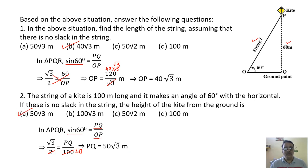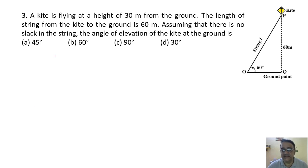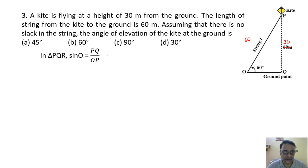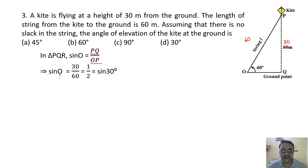Question 3: A kite is at 30 meter height, string length is 60 meter. Find angle of elevation. Opposite and hypotenuse given, so sin O = PQ/OP = 30/60 = 1/2. Since sin 30° = 1/2, the angle is 30 degrees. The correct option is option D.